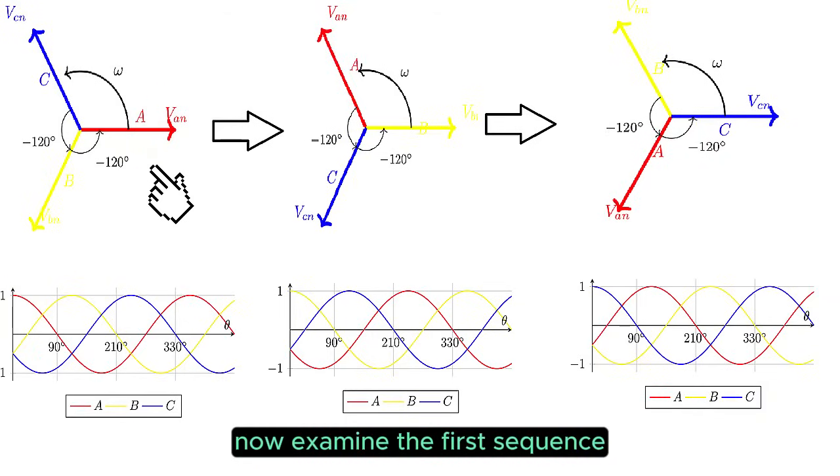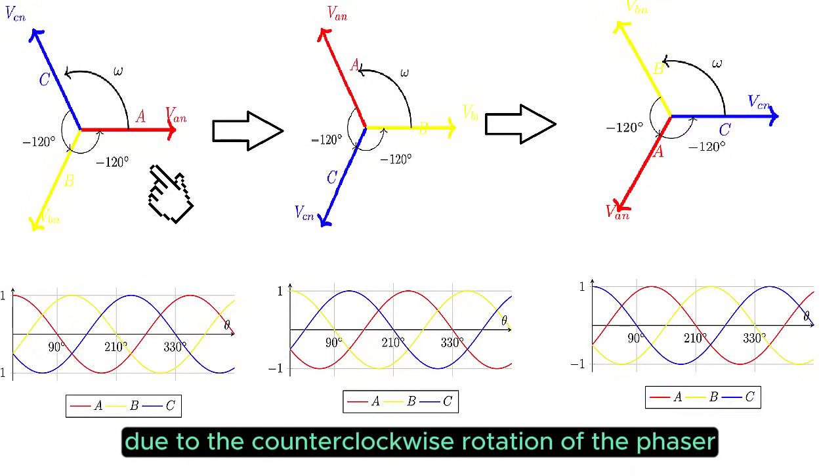Now, examine the first sequence, the ABC sequence. A phase diagram reveals VAN, VBN, and VCN, with VAN leading at the zero-phase point due to the counterclockwise rotation of the phasor.